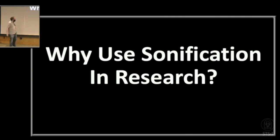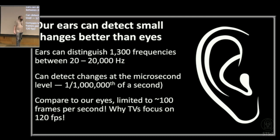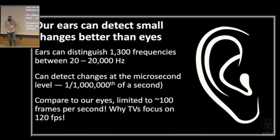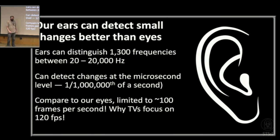So why do we want to use sonification for research? First, the human ear is actually way better at detecting small changes than the eyes. Typical human ears can distinguish over 1,300 different frequencies of sound, and you are sensitive to changes at the microsecond level — that's one millionth of a second. Human eyes, on the other hand, are limited to about 100 changes per second. This is one reason why monitor companies are not making thousand-frames-per-second displays — your eye simply is not sensitive to changes much faster than 100 frames per second. In astronomy, things that change are often very interesting.